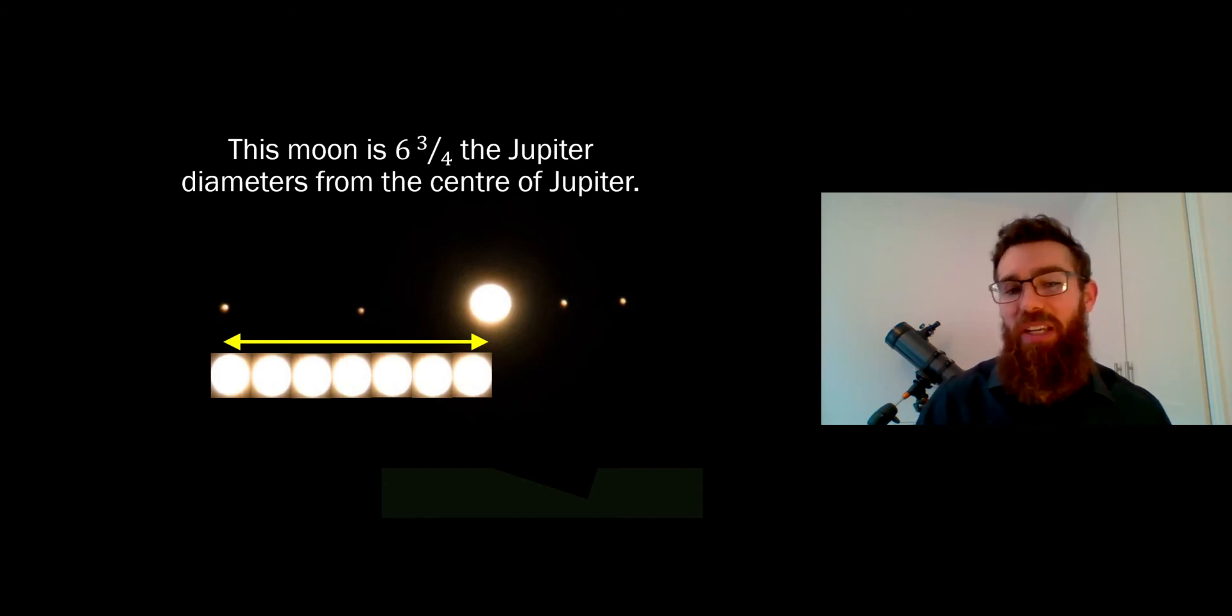It's about six and three quarters for this particular one. You could do a much better job if you have more time. Do it for each of the four moons and you'll get a distance in Jupiter diameters. You're just measuring a relative distance, and you can do it visually if you want because you can get an approximation. You get a better, more accurate result if you actually measure it like this.